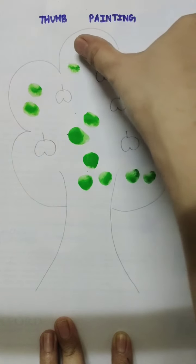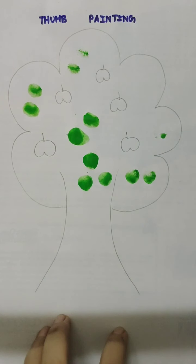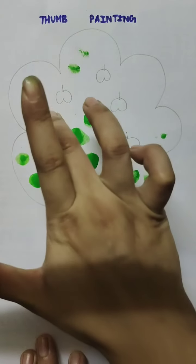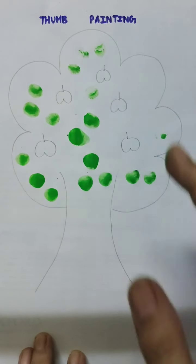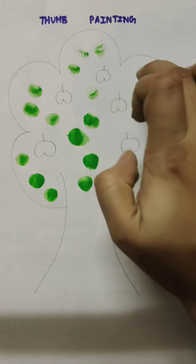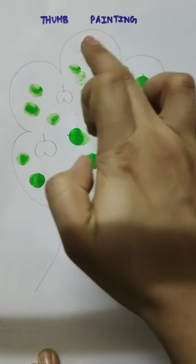You have to make sure that you don't take too much water. Take a minimum amount of water. Otherwise it will be too wet and your thumbprints and fingerprints will not come properly. So you have to make sure that the paint is more and the water is less.